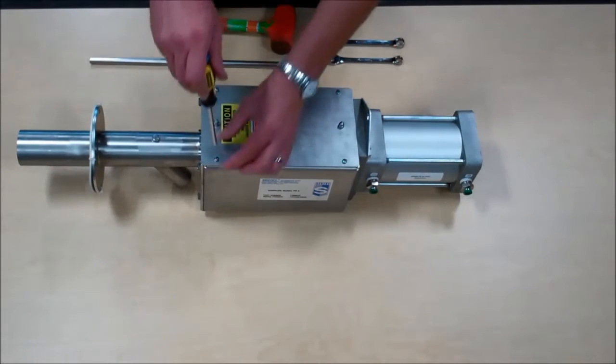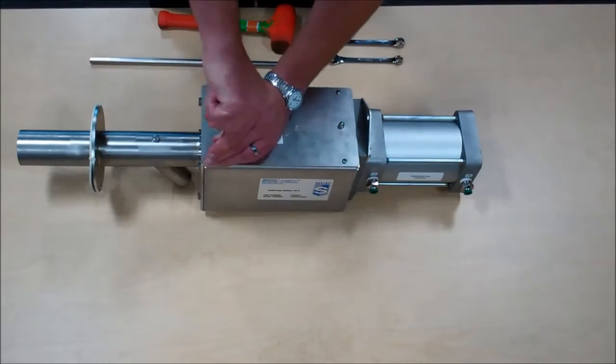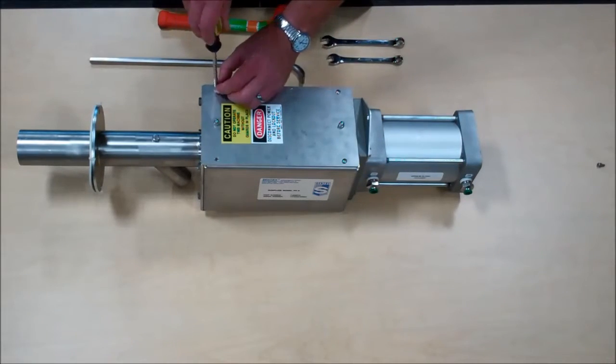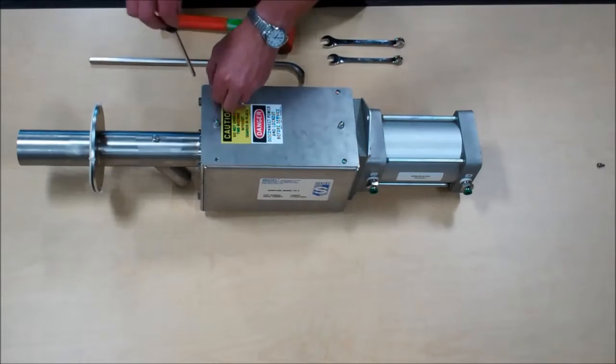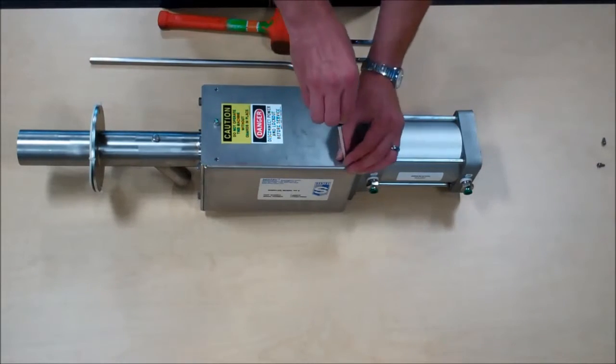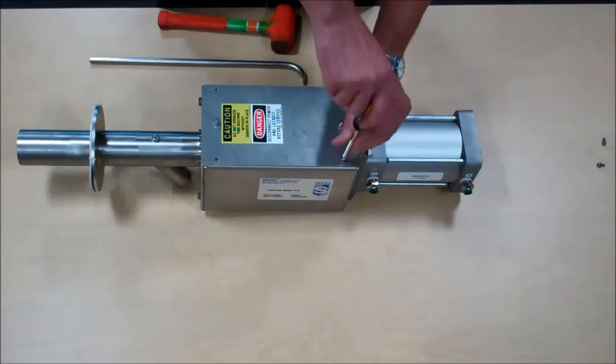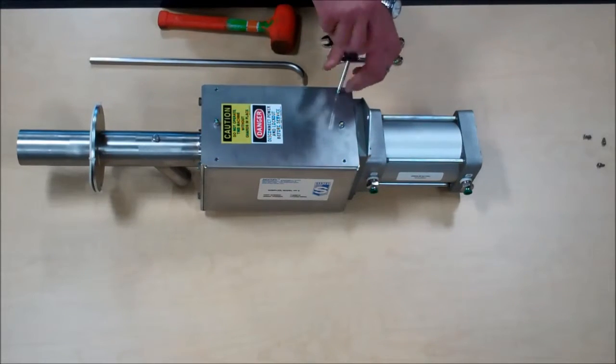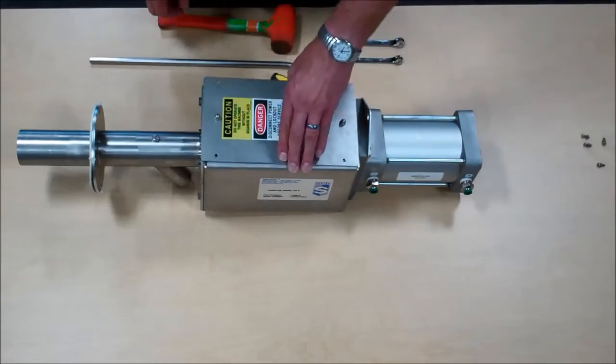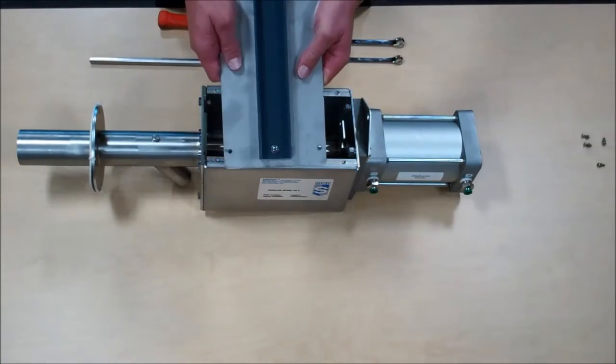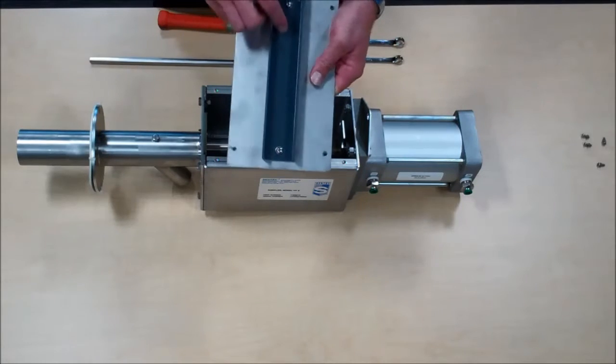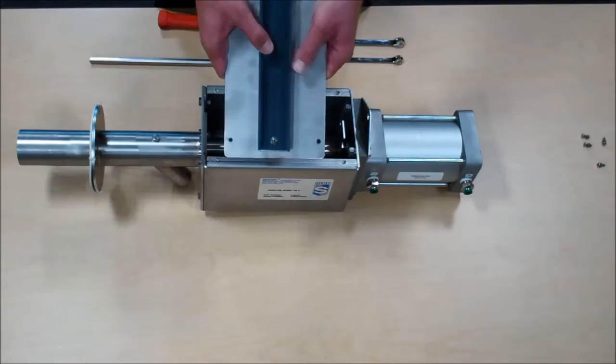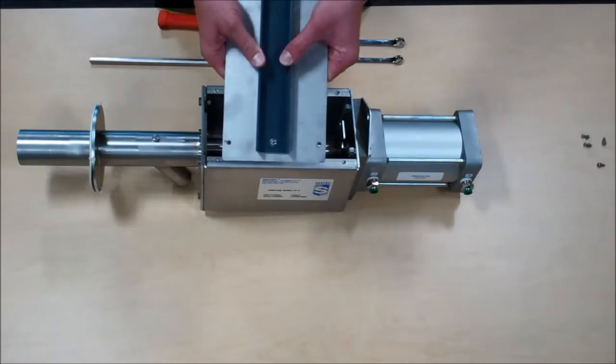We'll begin by removing the cover plates. Note the condition of this channel mounted to the inside of the top cover plate. This is the guide for the sample tube and needs to be in good, complete condition.